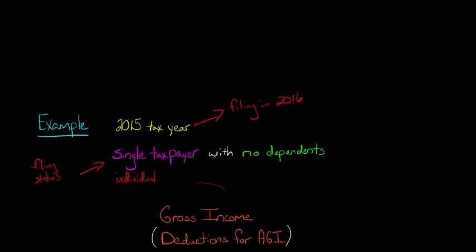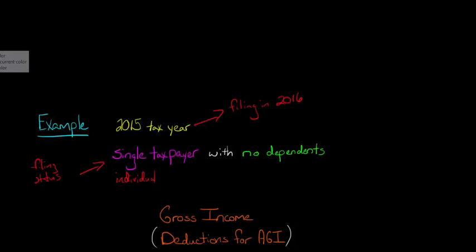So let's jump in and put some numbers to this. We're going to start out with gross income, which includes wages and might include some investment income. For this individual, we'll say that gross income is $27,000 for the year.